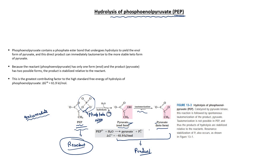The product exists in two forms, meaning it is more stable compared to the reactant. Additionally, the second product is inorganic phosphate, which undergoes resonance stabilization. This product stabilization is a key factor contributing to the high standard free energy of hydrolysis of phosphoenol pyruvate, which is minus 61.9 kilojoules per mole.